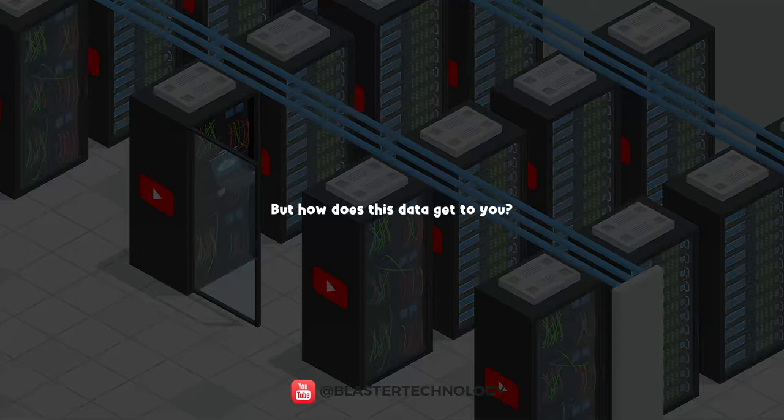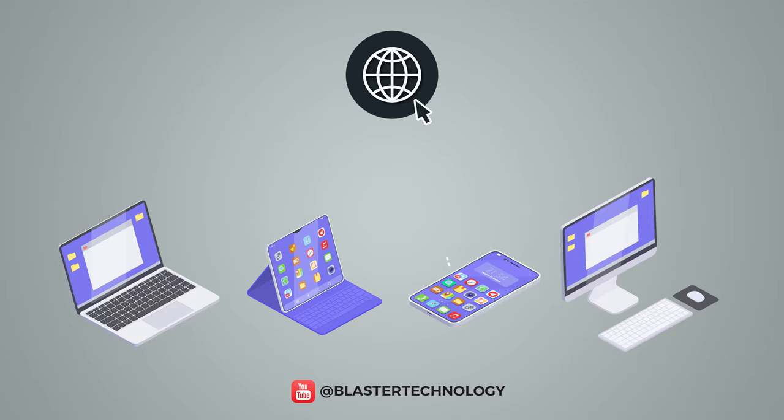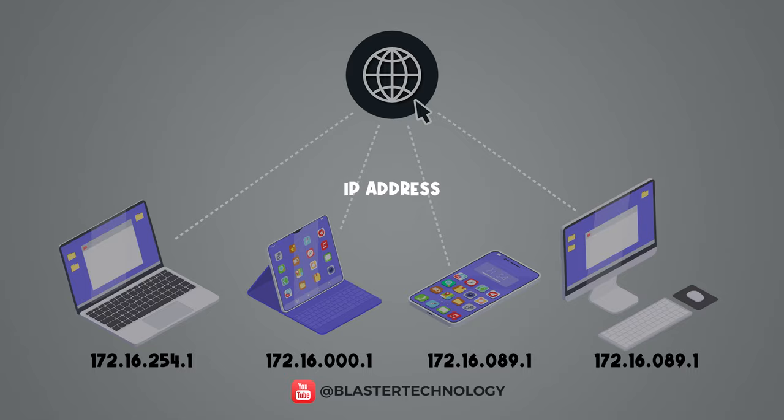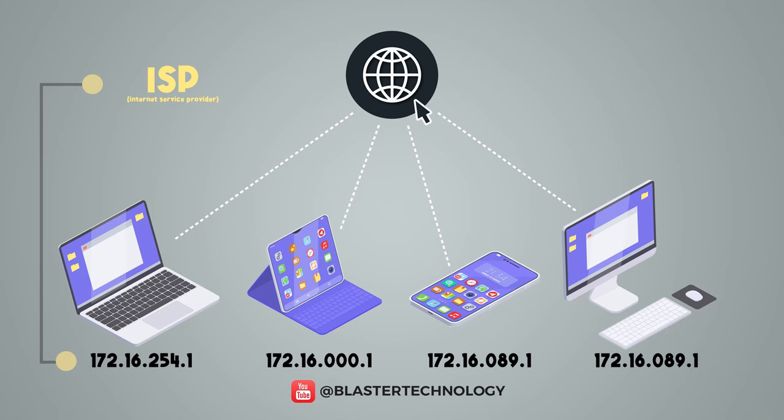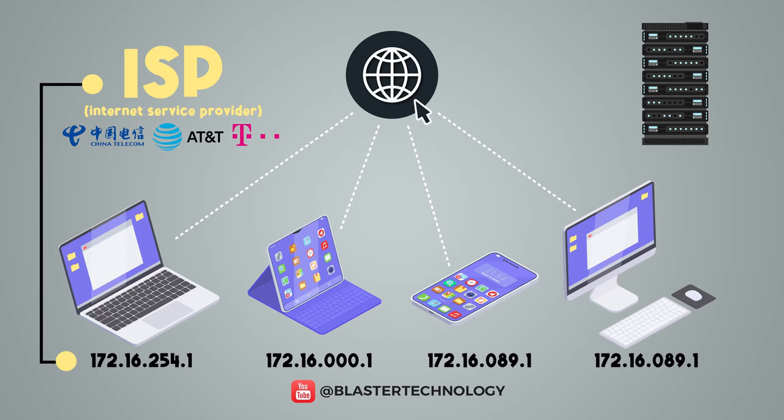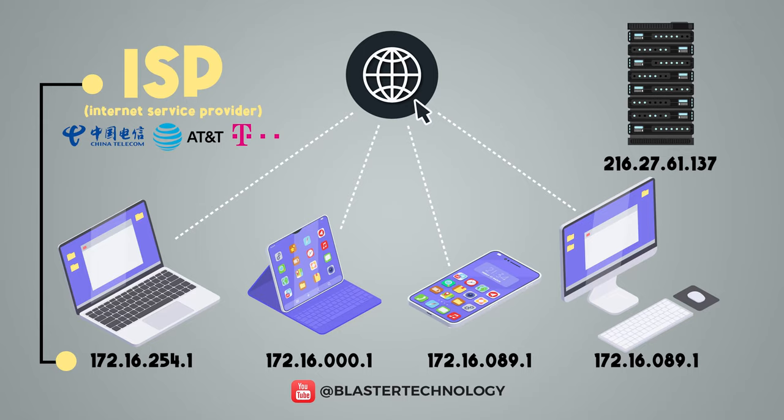But how does this data get to you? Any device connected to the internet is identified by a unique group of numbers called the IP address. The IP address of your phone or laptop, for example, is given by your internet service provider. Also, the server where the data you want to access is stored also has an IP address. So, through the IP, the information has a sender and a recipient.